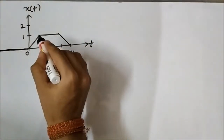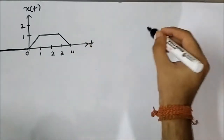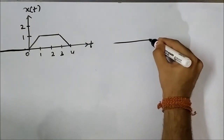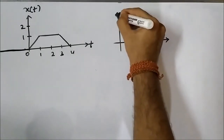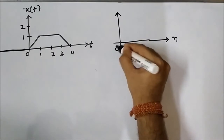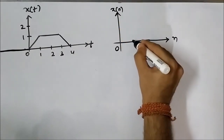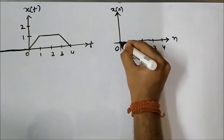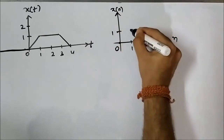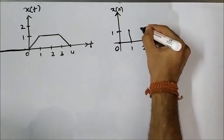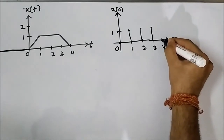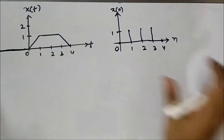We will take the same signal as in the continuous time domain. If we take samples of these signals at equidistant points, the discrete time signal will look something like this: 0, 1, 2, 3, and 4. At 0 it is 0, at 1 it is 1, at 2 it is also 1, at 3 it is also 1, and at 4 it is again 0. So this is the discrete time signal.